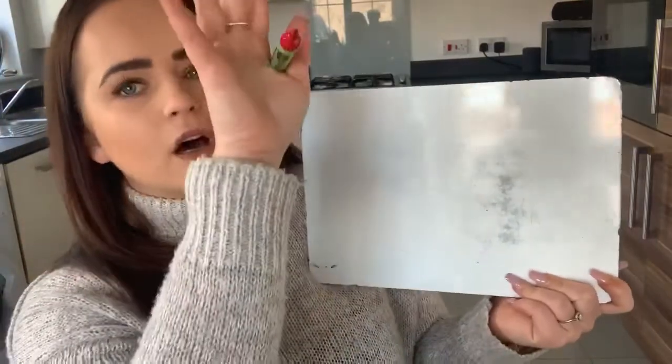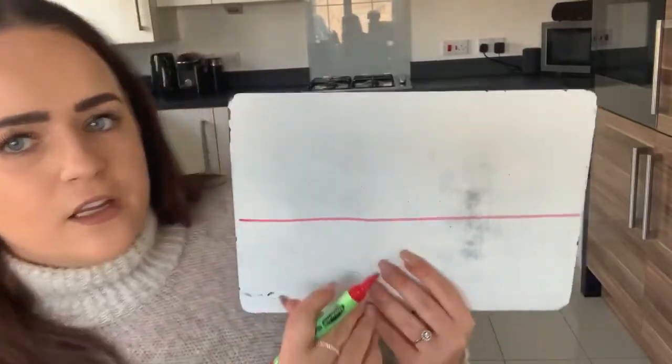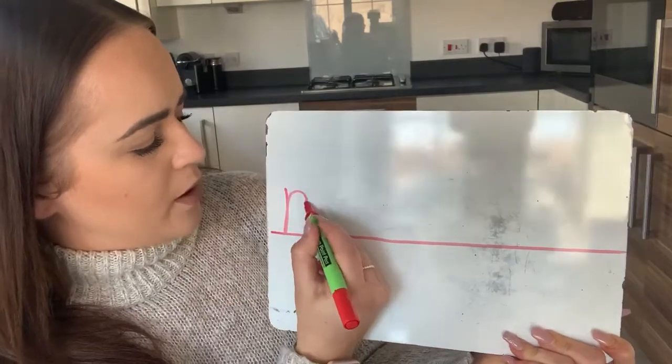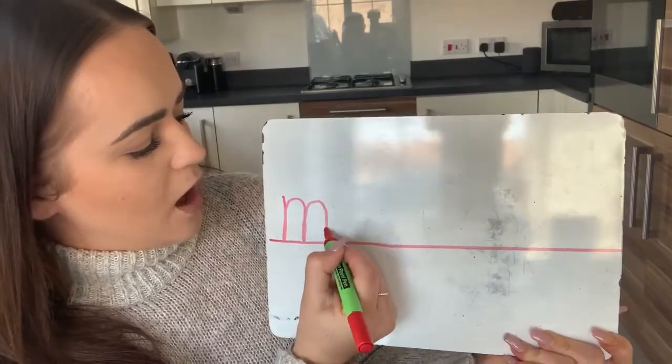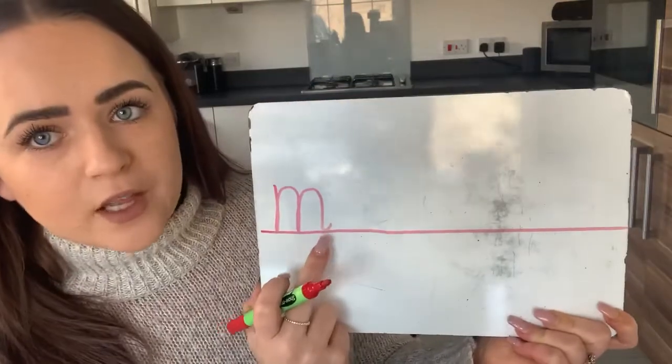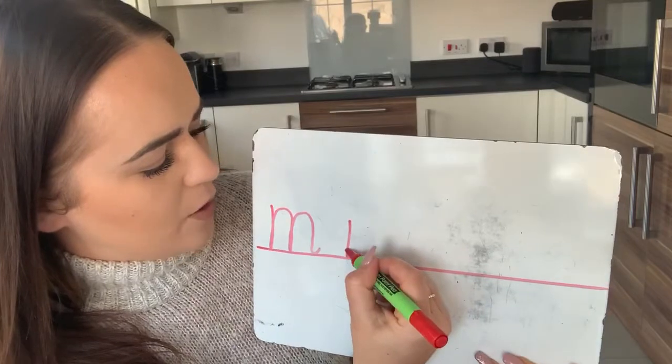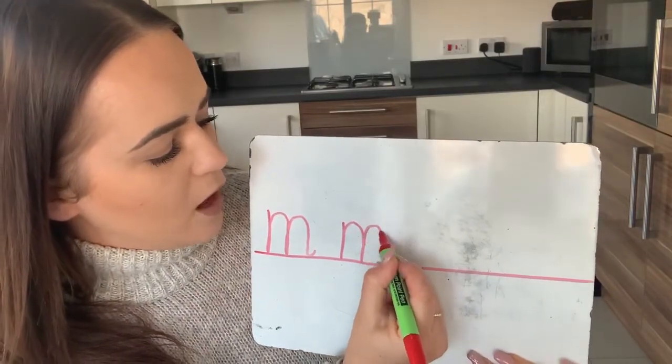Let's have a look at how we form this letter. We all know it's a one-arm robot which means we go down, up and over. It does not tickle the top and it does not tickle the bottom — it just sits beautifully on the line. Are you ready? You can join in with me if you've got a pen and paper to hand. Down, up, over, over. Can you see my little flick at the bottom? Make sure you've added that on yours. Down, up, over, over.